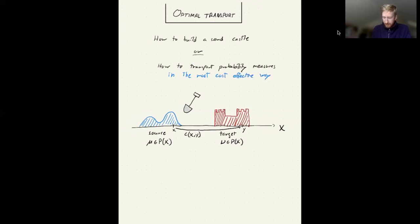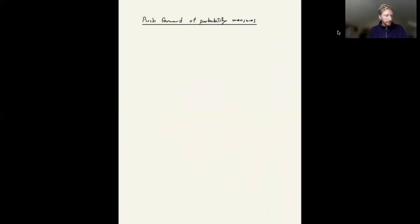To make this a bit more precise, I'm going to first have to talk about push forwards of measures. And the usual setting for optimal transport is given by Polish spaces. So a Polish space is a separable topological space which admits a complete metric. So a good example to keep in mind here is to just think of x and y as Rn. This is both an interesting case in its own, and it also serves as a model case for the rest of the theory.